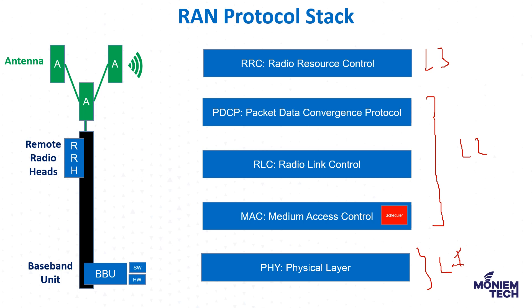When discussing the RAN protocol stack before RAN disaggregation — in a non-disaggregated RAN such as the eNB for 4G or gNB for 5G — all these protocols are executed at the same site or the same cell. In the upcoming discussion, we will see how RRC will be disaggregated from the other protocols.